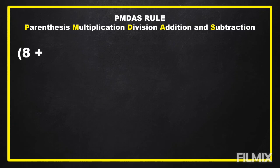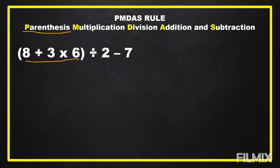We are going to solve this expression: 8 plus 3 times 6, in parentheses, divided by 2 minus 7. First, we solve what is inside the parentheses. Inside the parentheses we have 8 plus 3 times 6. Following the PMDAS rule even inside the parentheses, we have both multiplication and addition, so we multiply first before we add. 3 times 6 equals 18. We place 18 inside the parentheses.